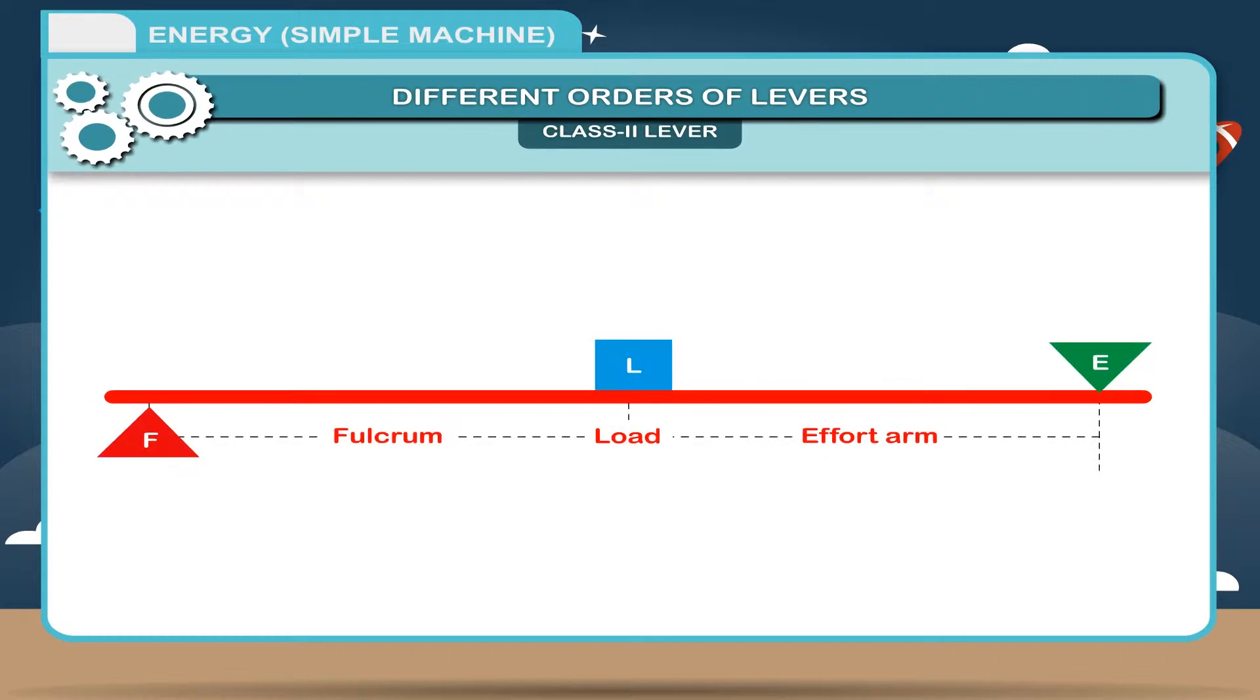Class 2 lever: In this class of lever, the load L lies between the fulcrum F and the effort E.